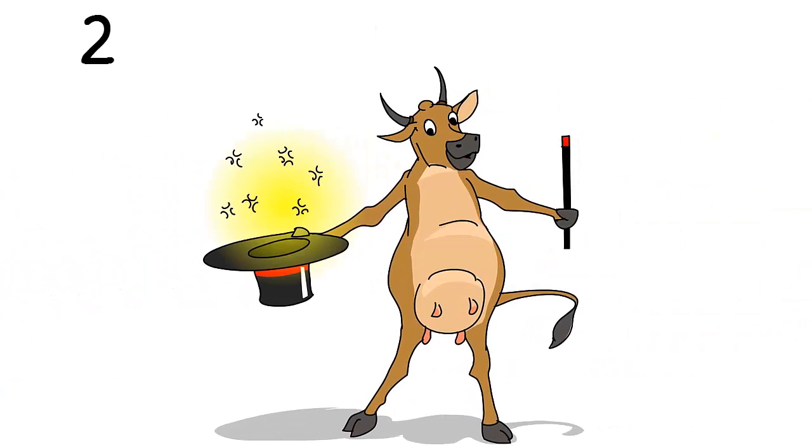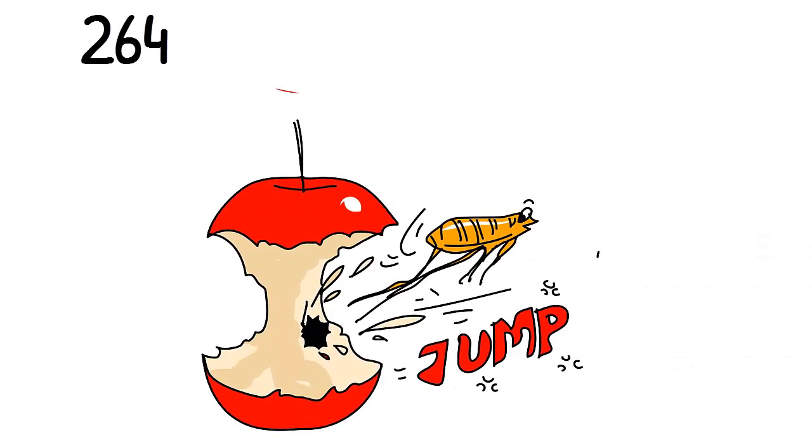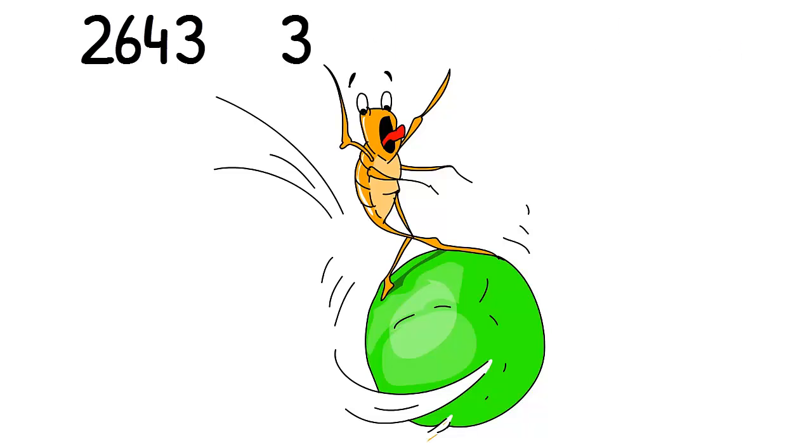Then the cow started doing some tricks. From the magician's hat, it pulled a core. Out of the core jumped a flea. The flea landed on a pea.